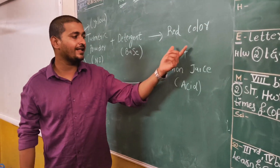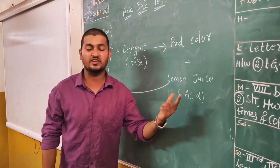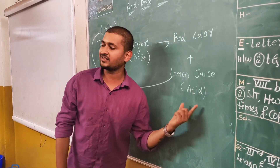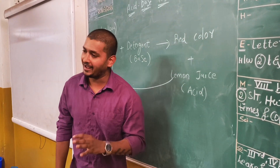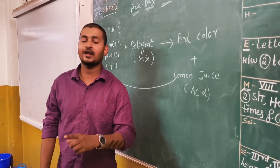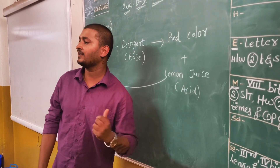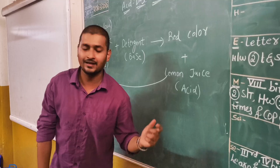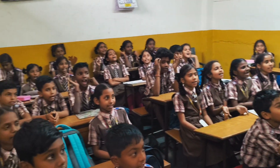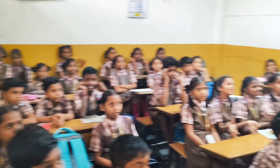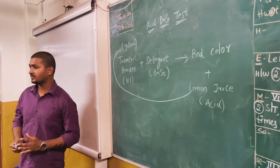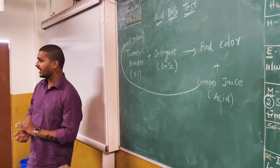Again from here on, if you are adding a lemon juice, which is basically an acid. Lemon juice is nothing but an acid. So the red color solution, if you are adding lemon juice which is basically an acid, it will turn back to which color? Yellow color! Understood everybody?